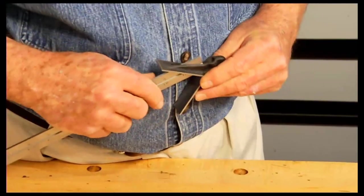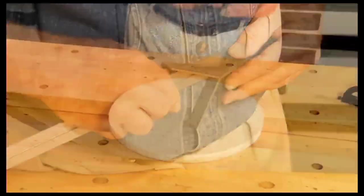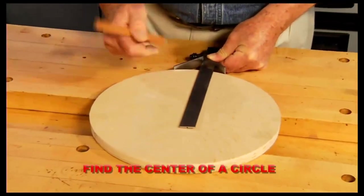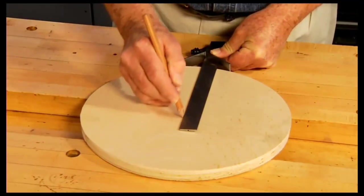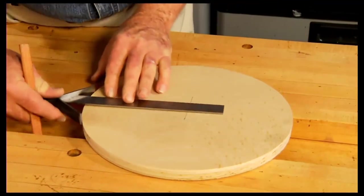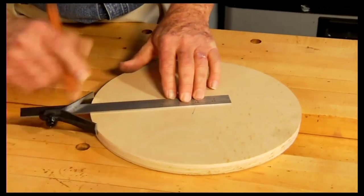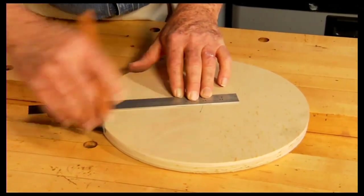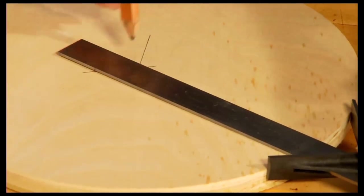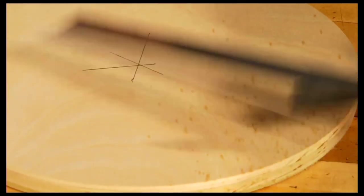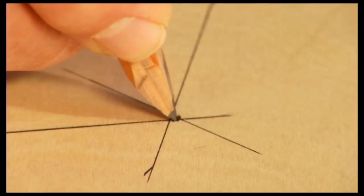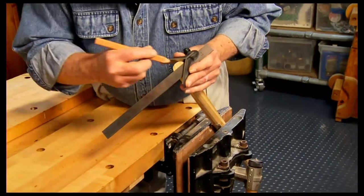By replacing the combination square's standard head with a center head, it's possible to quickly and accurately find the center of a circle or the center of a dowel or rod.